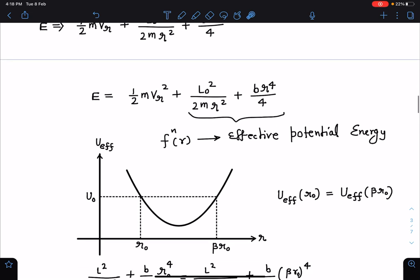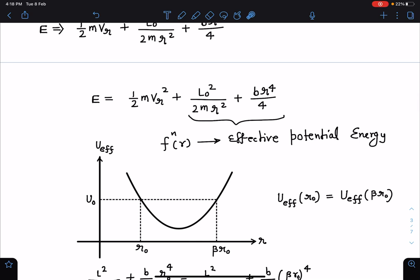I am drawing this graph of U_R. If it is a stable orbit, the potential energy graph will have a shape like this. It is not parabola, it can be any random graph. It is given that radius is changing from R₀ to βR₀ and if total energy is constant here and here, we can see if these are the radius values.